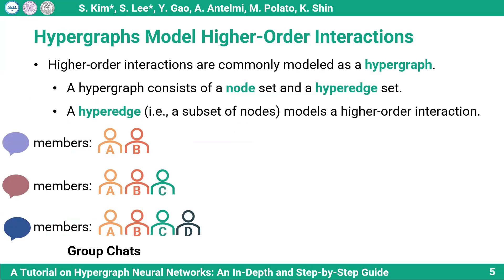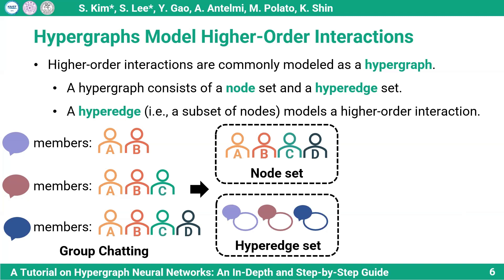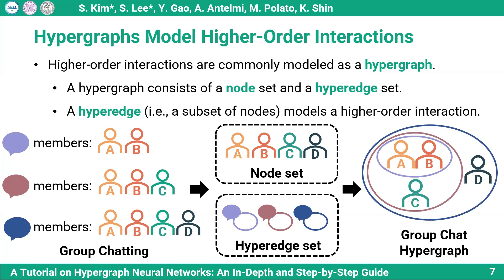Mathematically, these higher-order interactions are commonly modeled as a hypergraph consisting of nodes and hyperedges. Each hyperedge is a subset of nodes of any size, and it typically represents a higher-order interaction among the nodes. For example, consider group chats from a messaging app as in the figure. Each member is modeled as a node, and each group is modeled as a hyperedge. The resulting hypergraph has four nodes and three hyperedges, with each hyperedge depicted as an ellipse containing its member nodes.